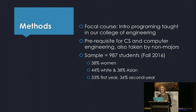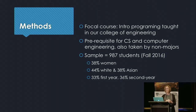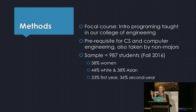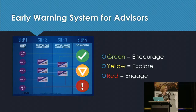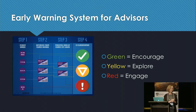We picked one course as a focal course in our college of engineering — a required CS course for all computer science majors, also taken by non-majors. It's a very large course. We looked at one term, almost a thousand students. They're mostly first and second year students, who are still getting into their academic rhythm and figuring out how to be successful.